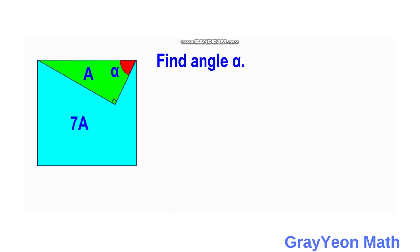The first thing we need to do is label the figure. We label the side of the square as S — all four sides as S — and we label the legs of the right triangle as A and B.